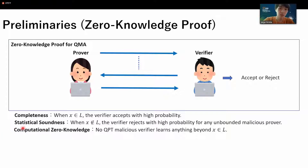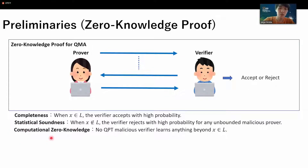The second property is statistical soundness. This guarantees that when the instance X is a NO instance, the prover rejects with high probability for any unbounded malicious verifier that tries to make the prover accept. The third property is computational zero-knowledge, which intuitively guarantees that no quantum polynomial-time malicious verifier learns anything beyond the fact that the instance X is a YES instance.